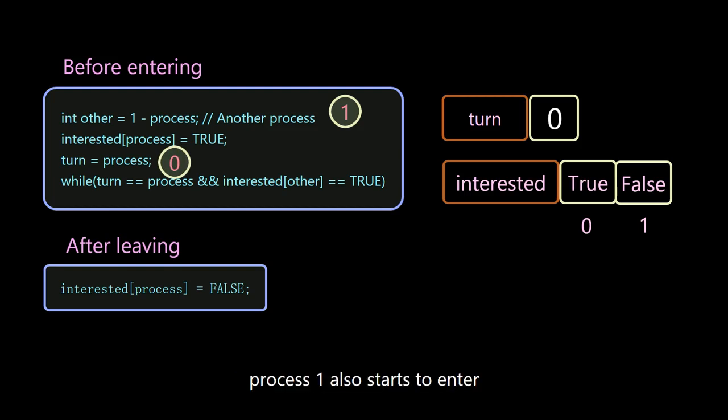Following the third line, turn is set to 0. But at this time, process 1 also starts to enter. And the first bit of the interested array is changed to true. The shared variable turn is changed to 1.